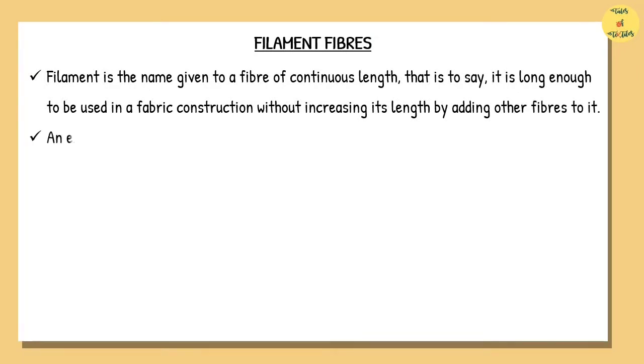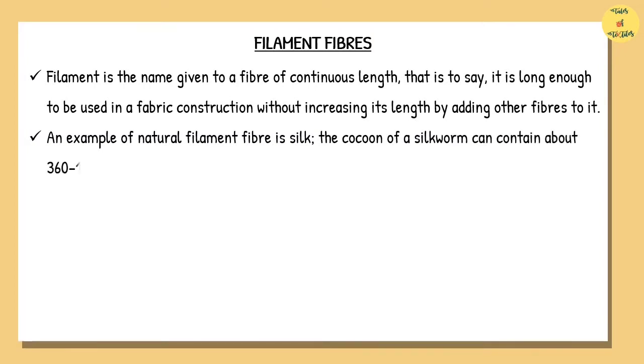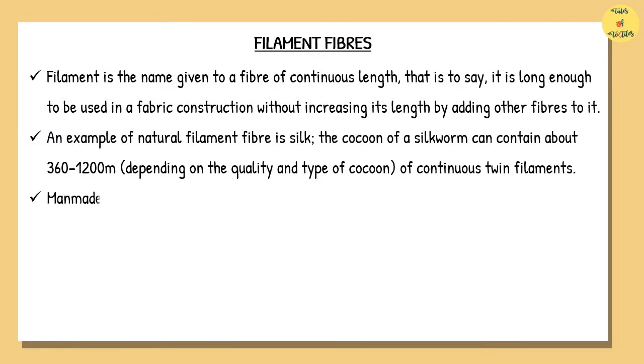An example of natural filament fiber is silk. The cocoon of a silkworm can contain about 360 to 1200 meters, depending on the quality and type of cocoon, of continuous twin filaments.